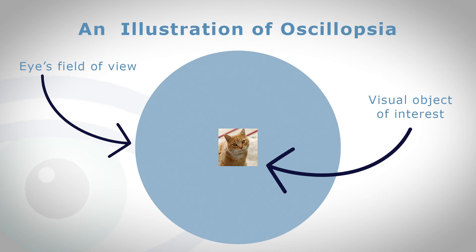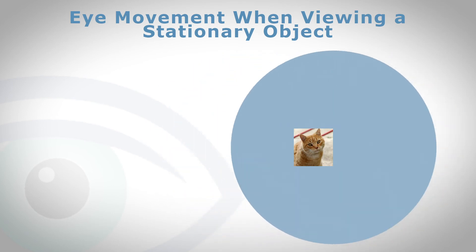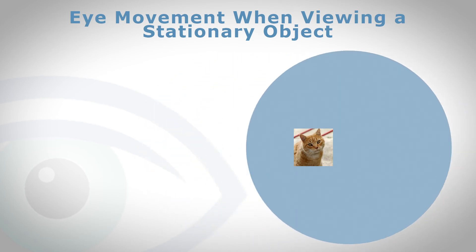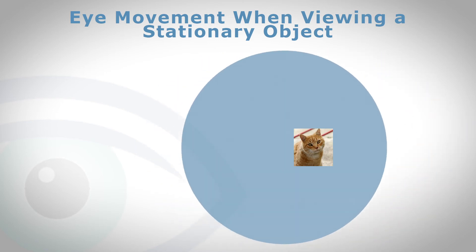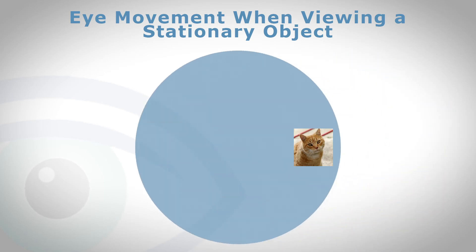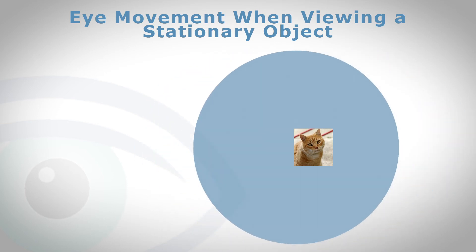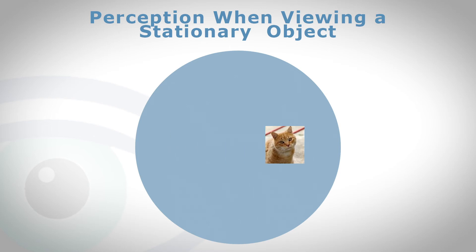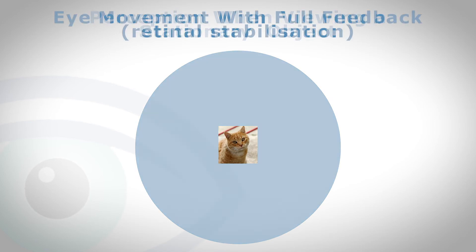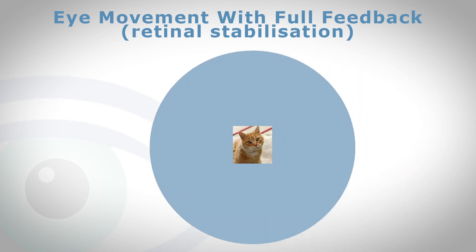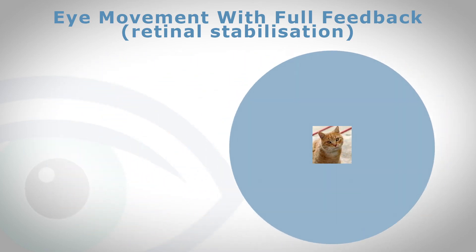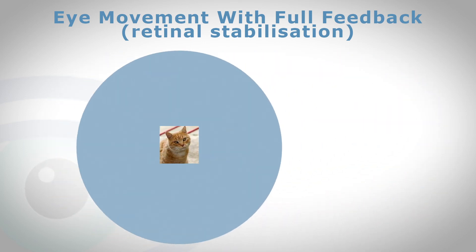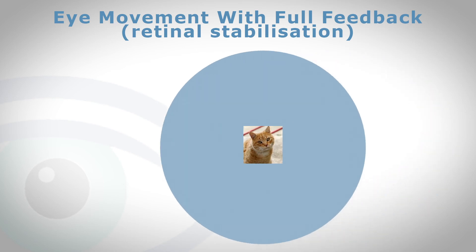So why do people get oscillopsia? Here is a picture of the target — the cat — in the middle, and the blue circle is your field of view, like the field of view of a camera. If the camera or your eye is moving because of nystagmus, you will see the object moving within your visual field even though the object itself stays still — it's your eyes that are moving. Now, if you could compensate for the eye movement and move the object at just the right speed to match the camera, what you'd see is a steady image, even though both the eye and the object are moving. That's retinal stabilization, and we can actually make that happen in the laboratory.